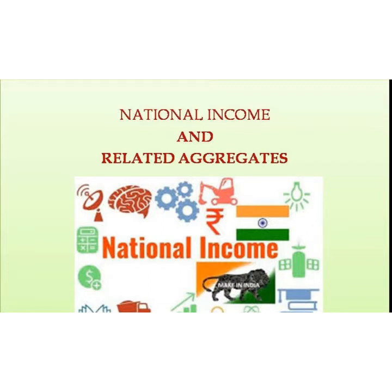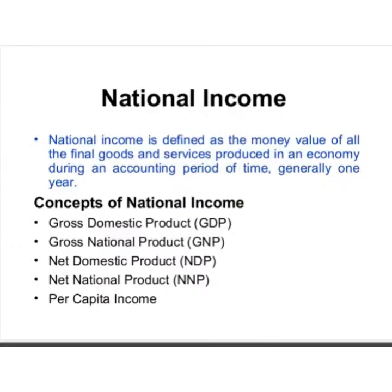National Income includes the aggregate value of the final goods. It is the money value of all the final goods and services produced by a country during the period of one year. It consists of different types of goods and services measured in different physical units, so it is not possible to add them together. Therefore, we reduce them to a common measure, which is money.